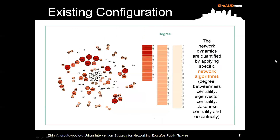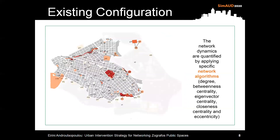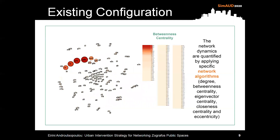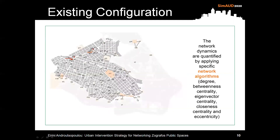Network algorithms are applied at the existing configuration. At the graphs, nodes' size and color correspond to degree and betweenness centrality, showing stronger and weaker nodes at the graph and at the actual map.